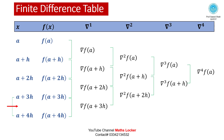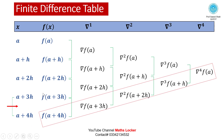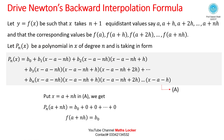Again taking the finite difference table: if the missing data lies in the last two values, which lie between a+3h and a+4h, we draw the backward diagonal and apply Newton's Backward Interpolation Formula.